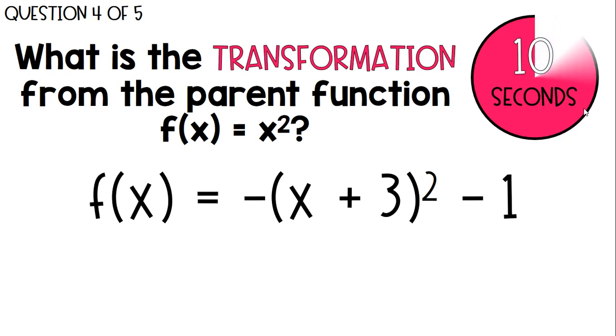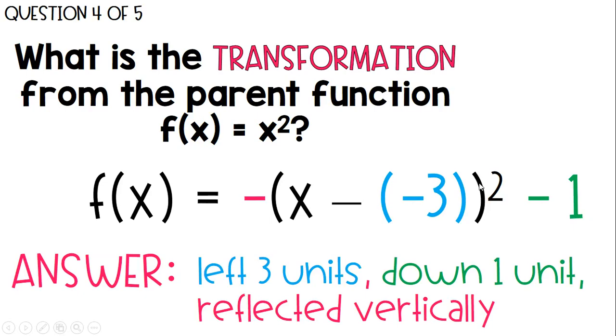Next one. Transformation of this function. That means it would go left 3 units, down 1 unit, and it would be reflected vertically. So x minus a negative 3 turns it into that x plus 3, so it's left 3 units. This is down 1 unit, and then the negative a value of negative 1 means it's going to be reflected vertically.